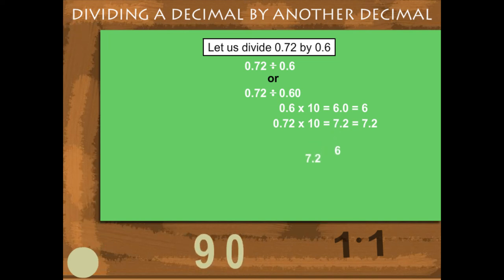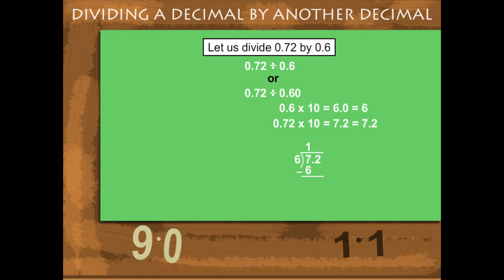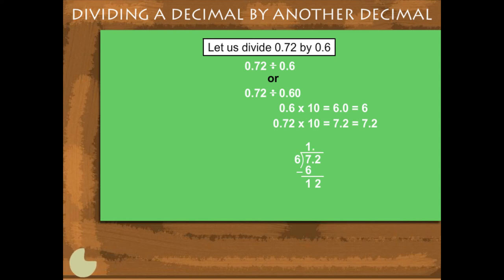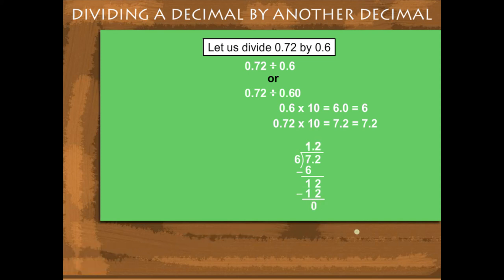So, 6 ones are 6. Subtract from 7 to get 1. Copy 2 and put the decimal after 1 in the quotient. 6 twos are 12, and the answer is 1.2.